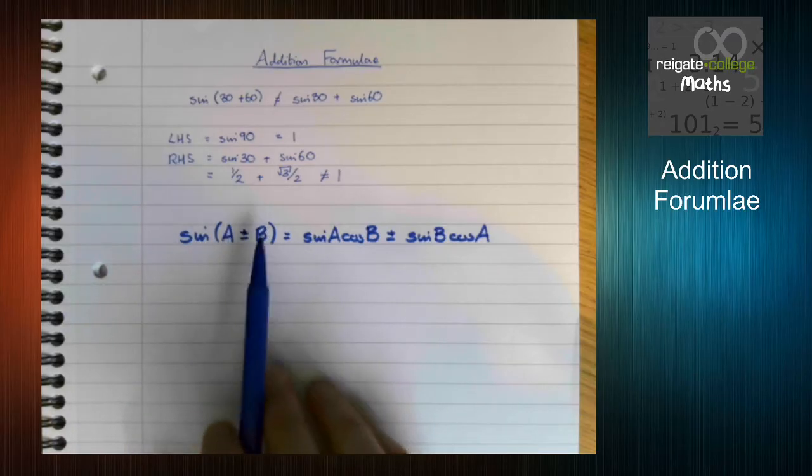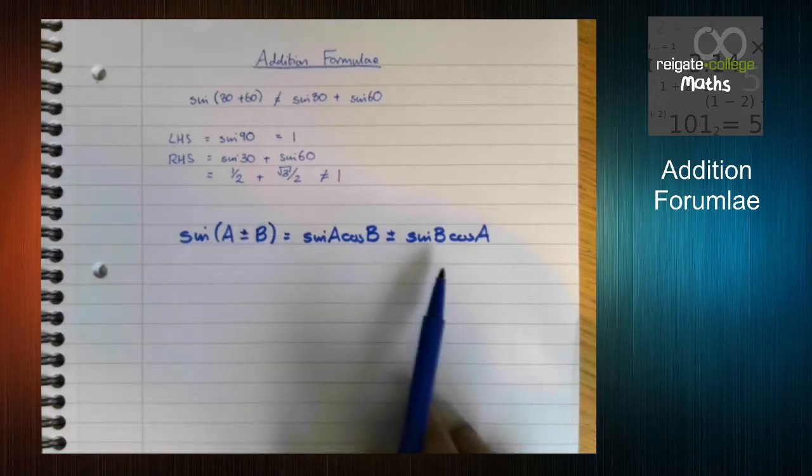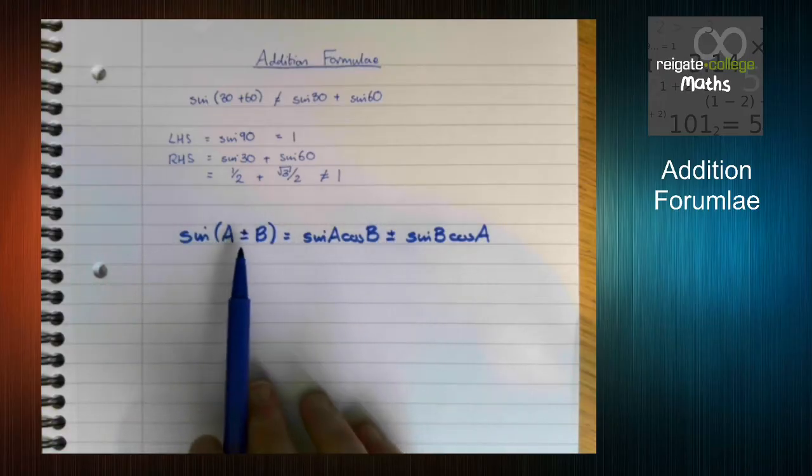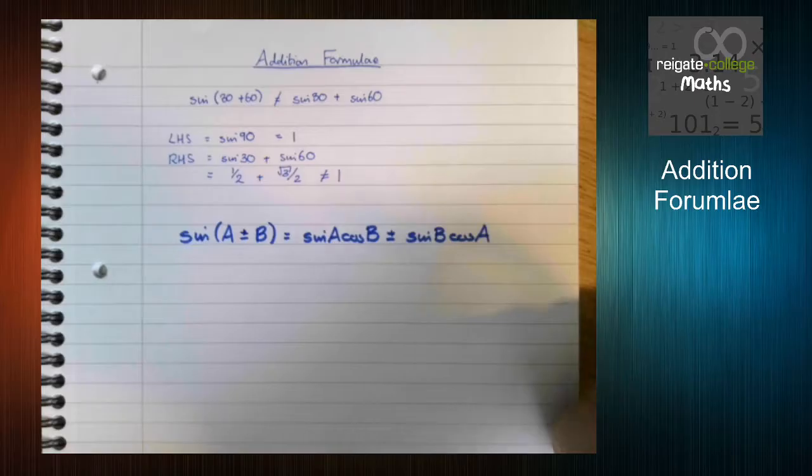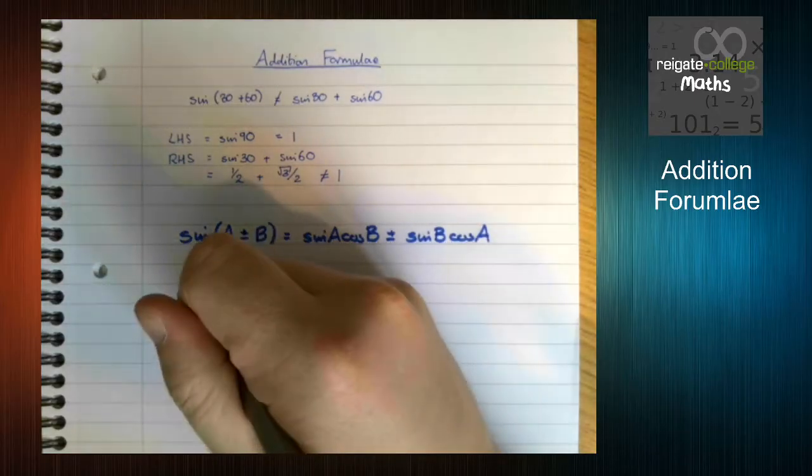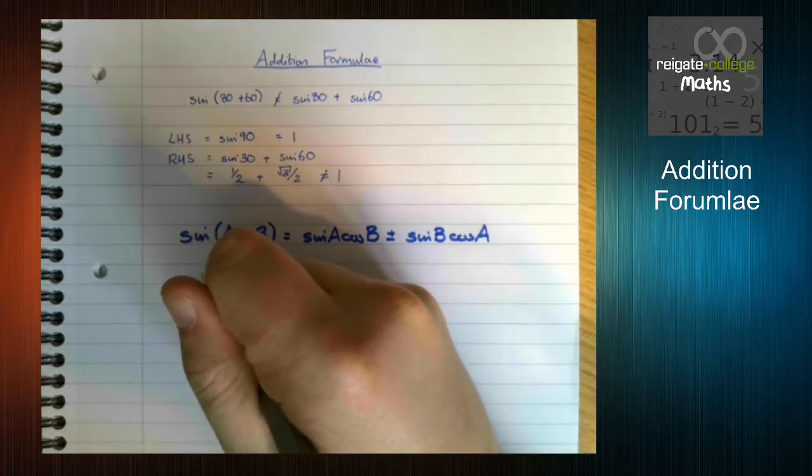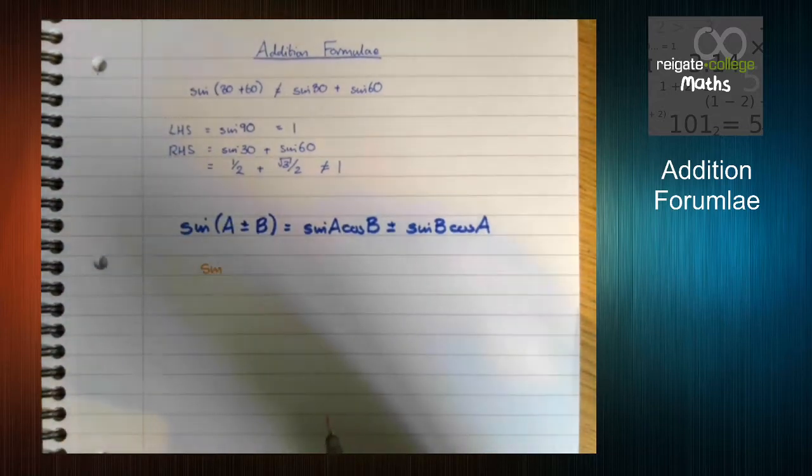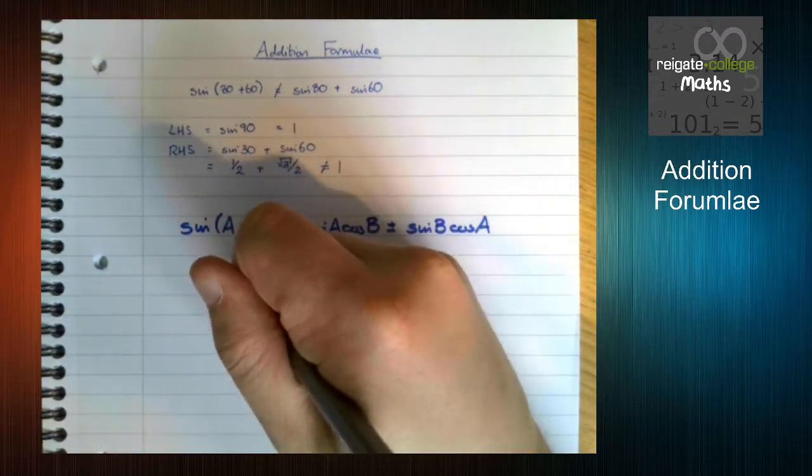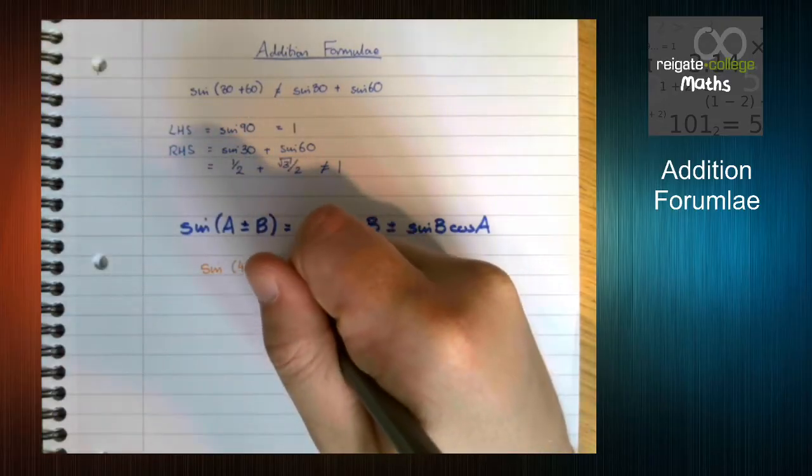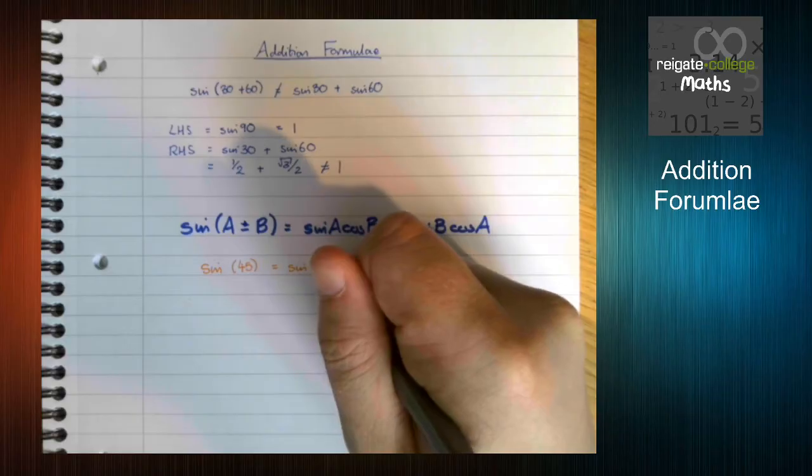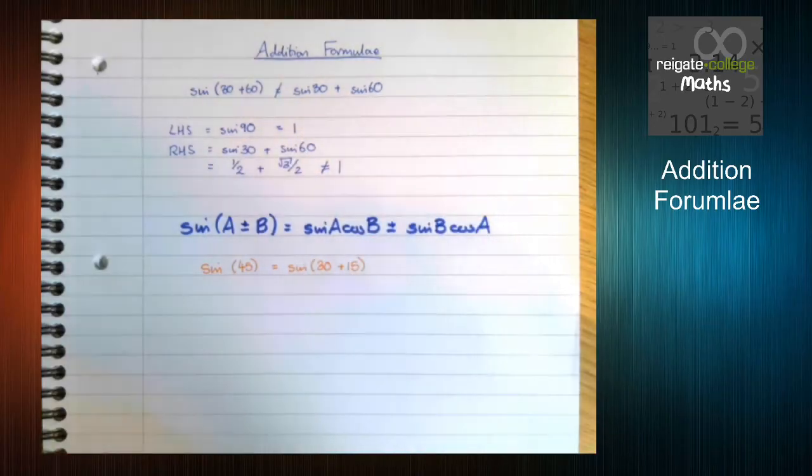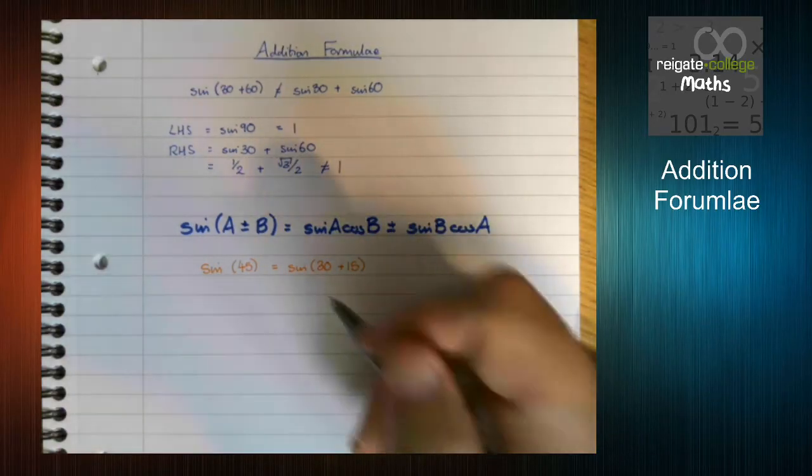What this is saying is, if you can write one angle as them added together, this is also a plus. If you can write it as two angles minus each other, this is a minus. So what do I mean by that? Well let's have a look, just using some numbers. Let's use sine of sine 45. We can imagine this as sine 30 plus 15, which is 45.